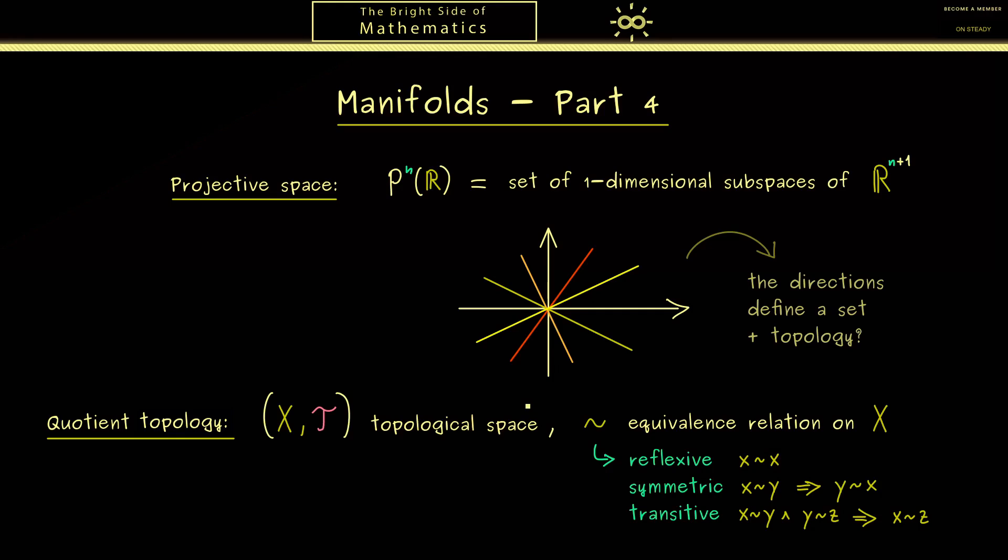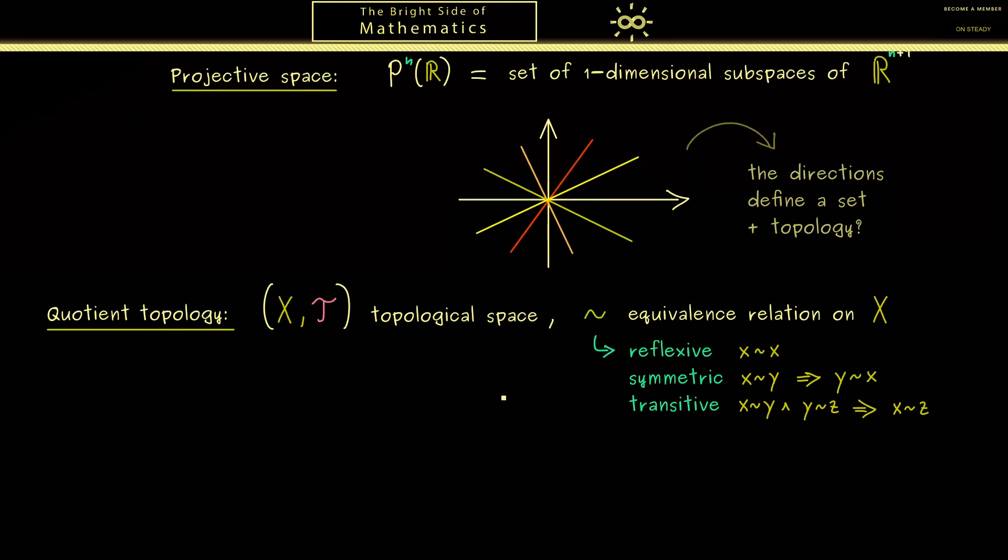And this leads us immediately to the notion of equivalence classes. Such an equivalence class of an element x is always a subset of the capital X. And usually it's denoted by brackets where we put the equivalence class tilde in the index. Now you should imagine this as the box with label x where we put in all elements y that are equivalent to x. Hence in the end we get a lot of boxes here that decompose the original set X. And please note here the topology T is not involved yet.